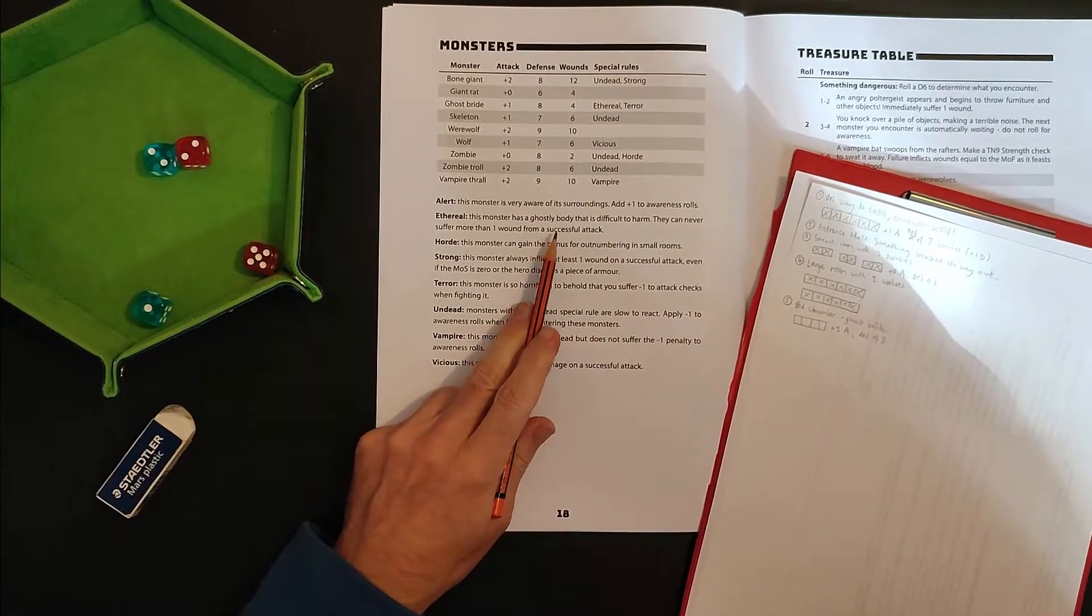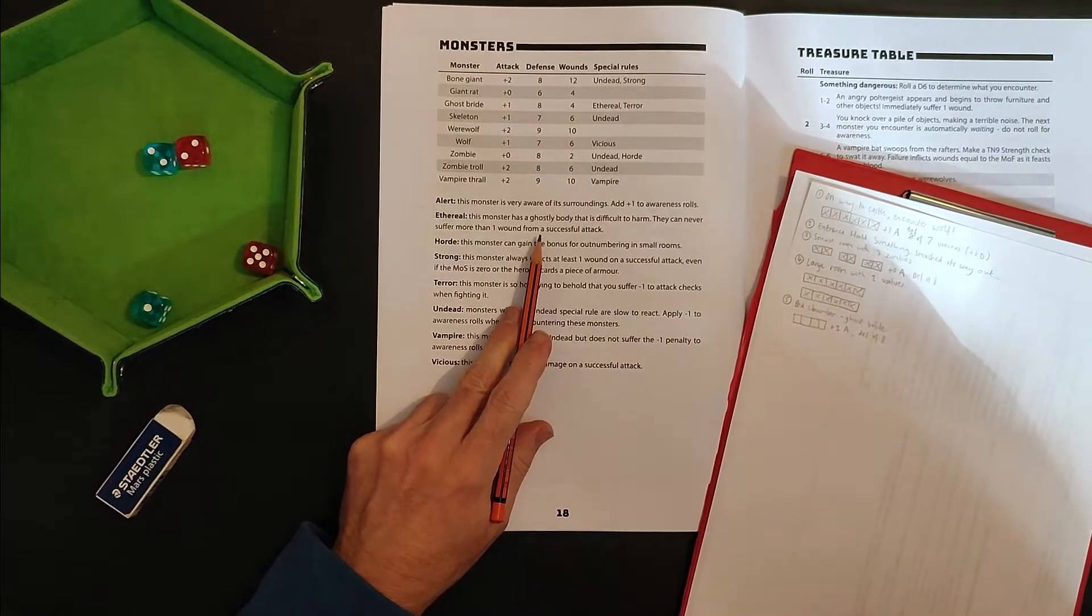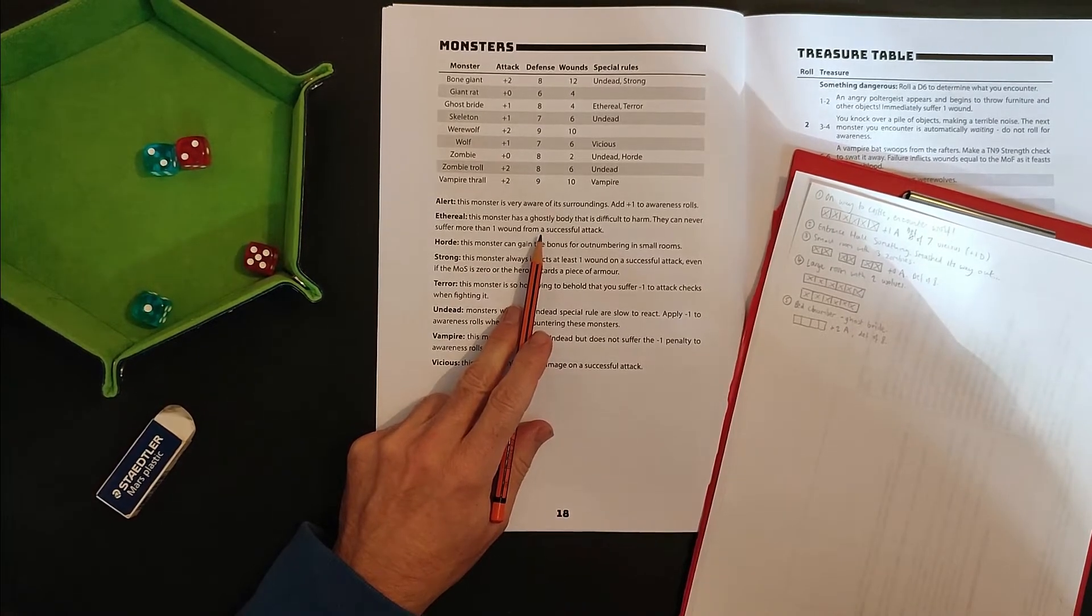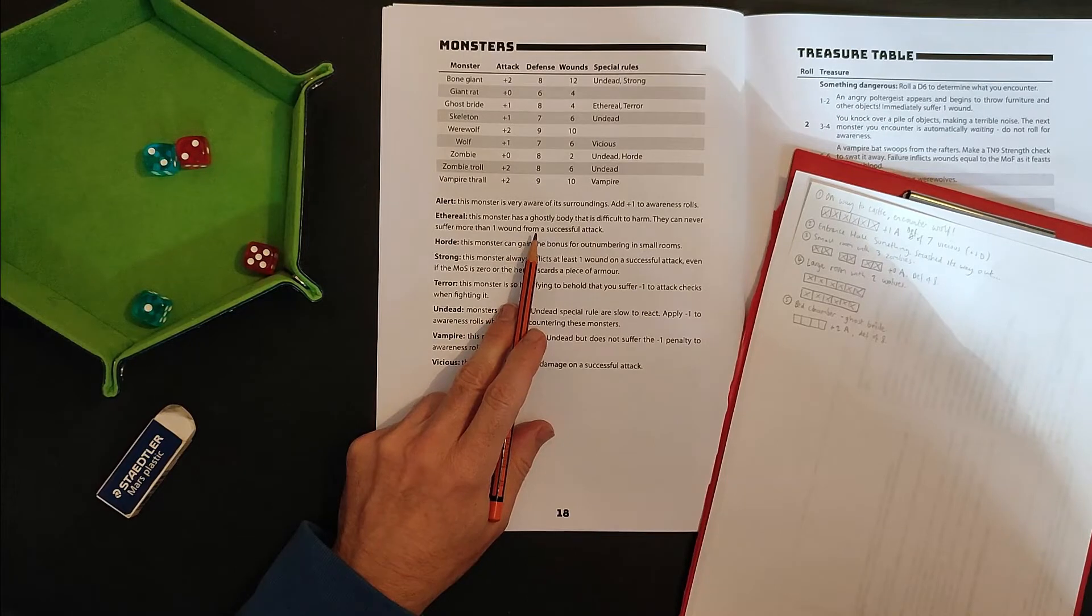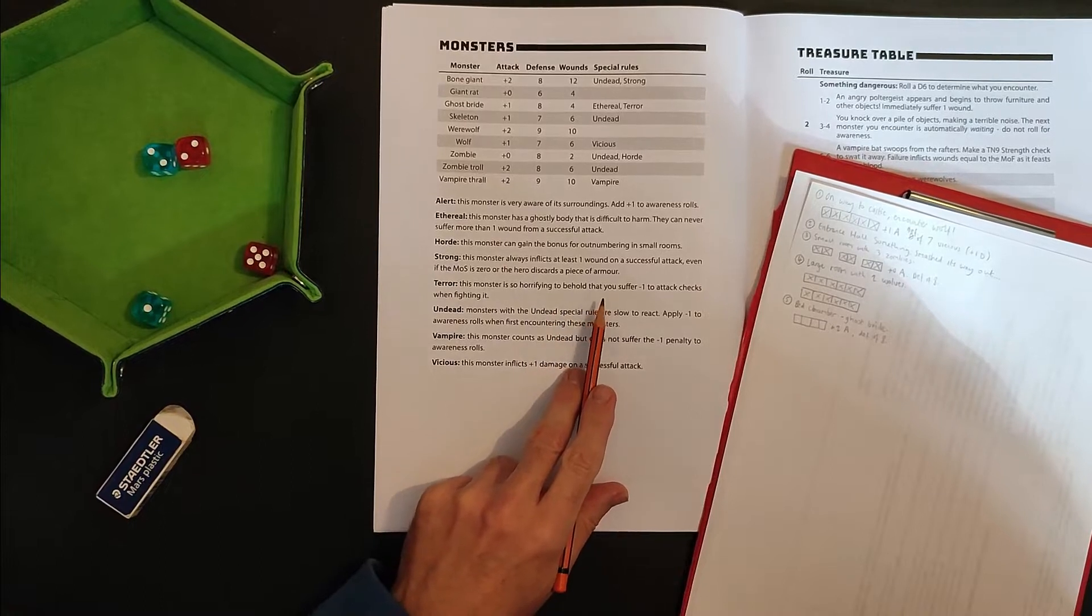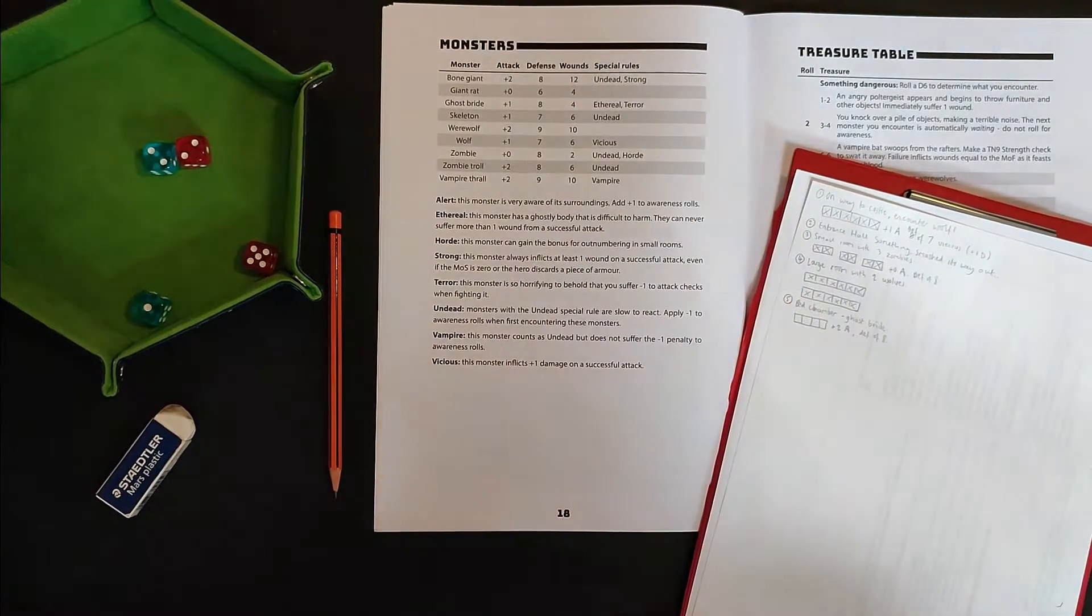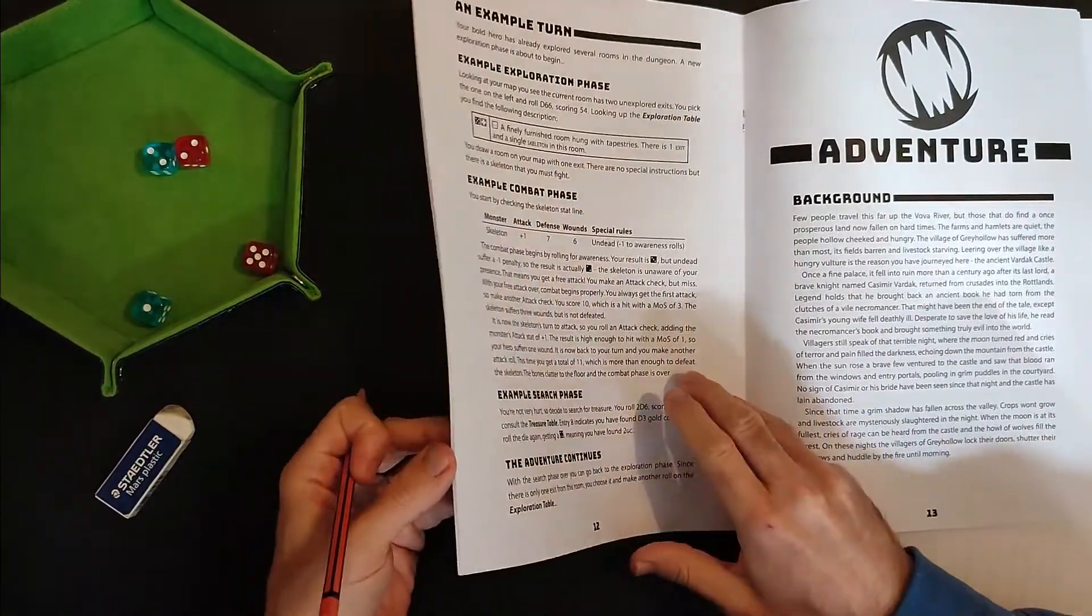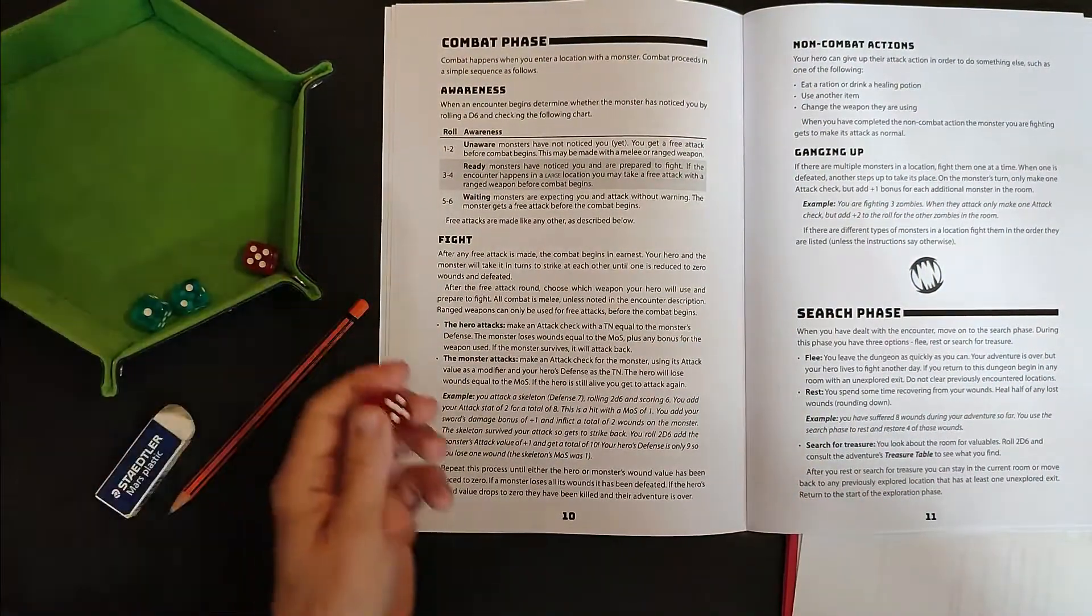Ethereal, this monster has a ghostly body that is difficult to harm. I can never suffer more than one wound from a successful attack. Ah, so only four wounds, but I have to do those points of damage on four separate attacks. So we're going to have at least four attacks going on. And terror. This monster is so horrifying to behold that you suffer minus one to attack checks when fighting it. Oh, so this could be a tough one. There was nothing about ignoring awareness. So I need to roll to see whether the ghost is aware of us.